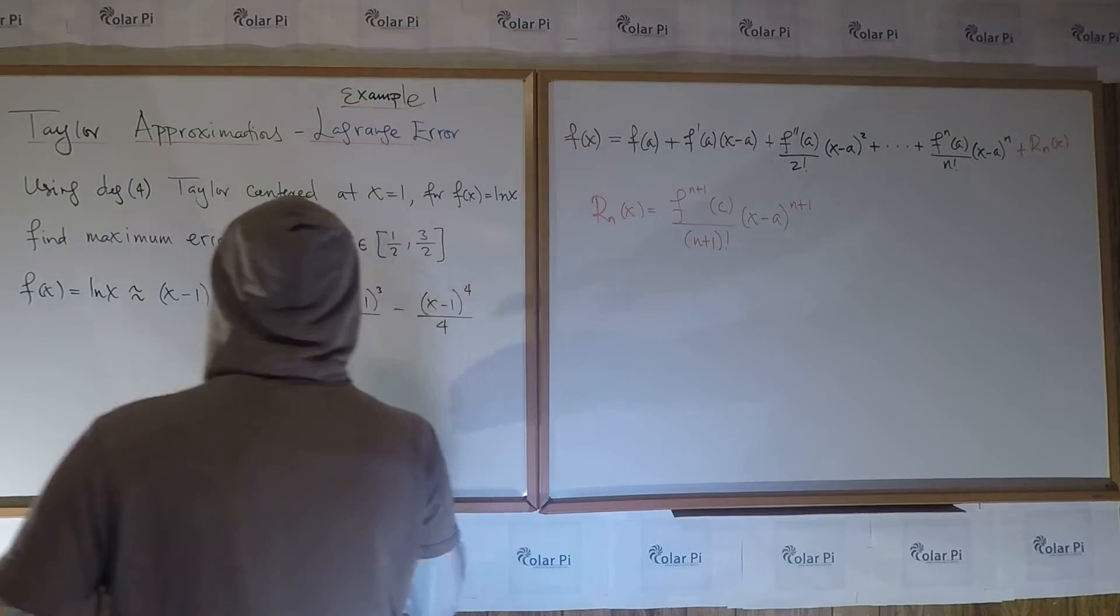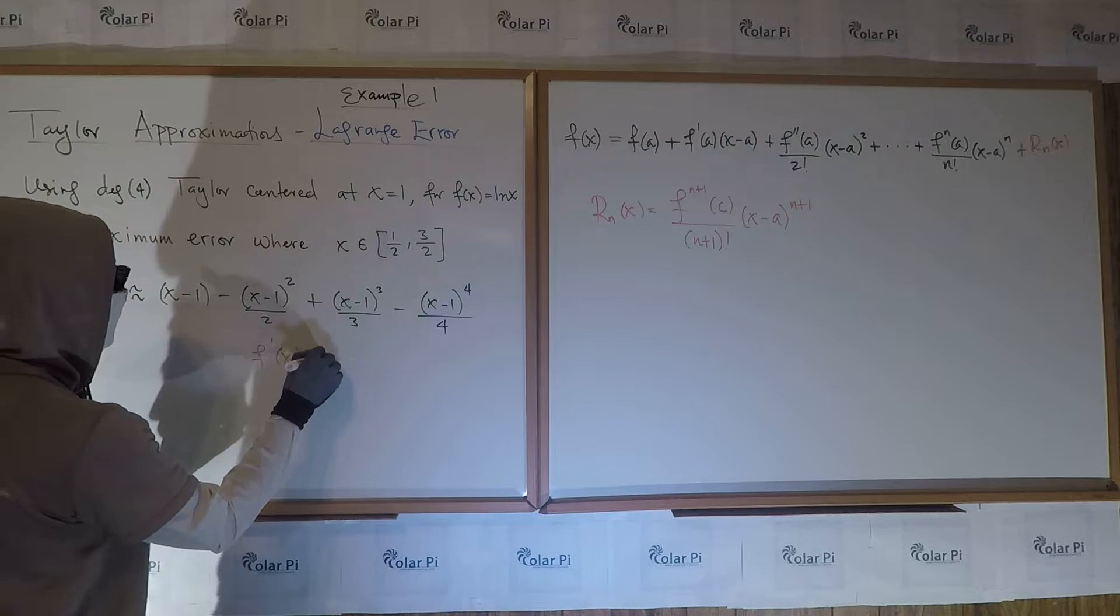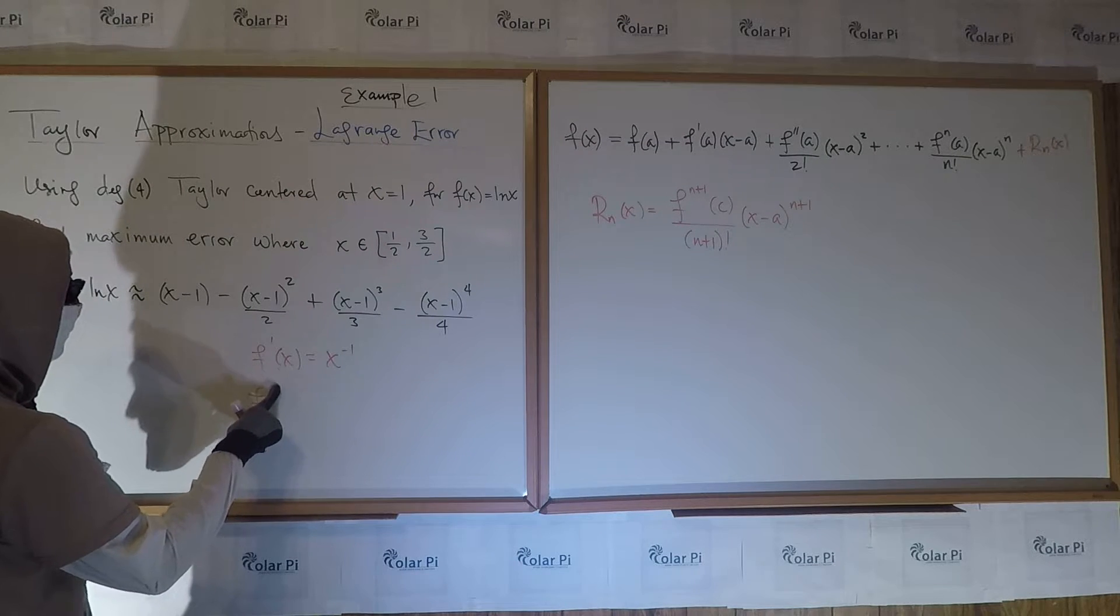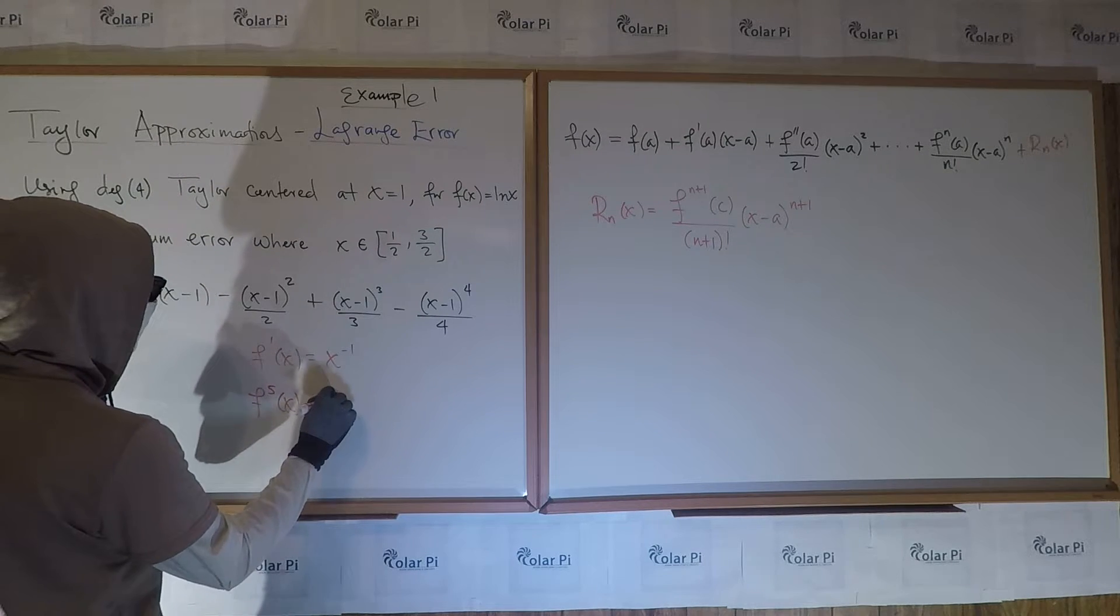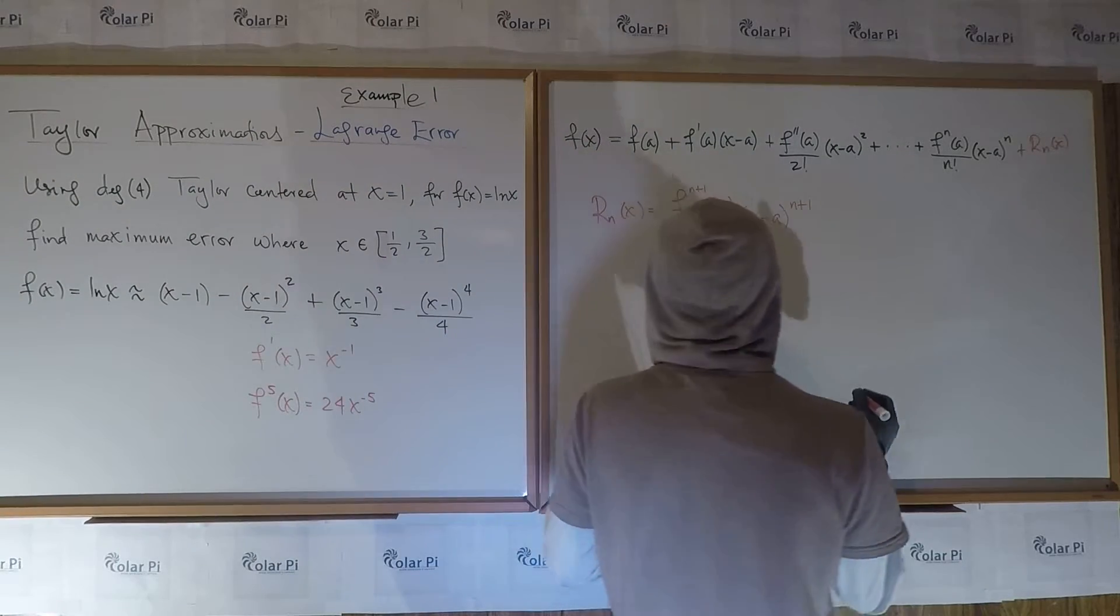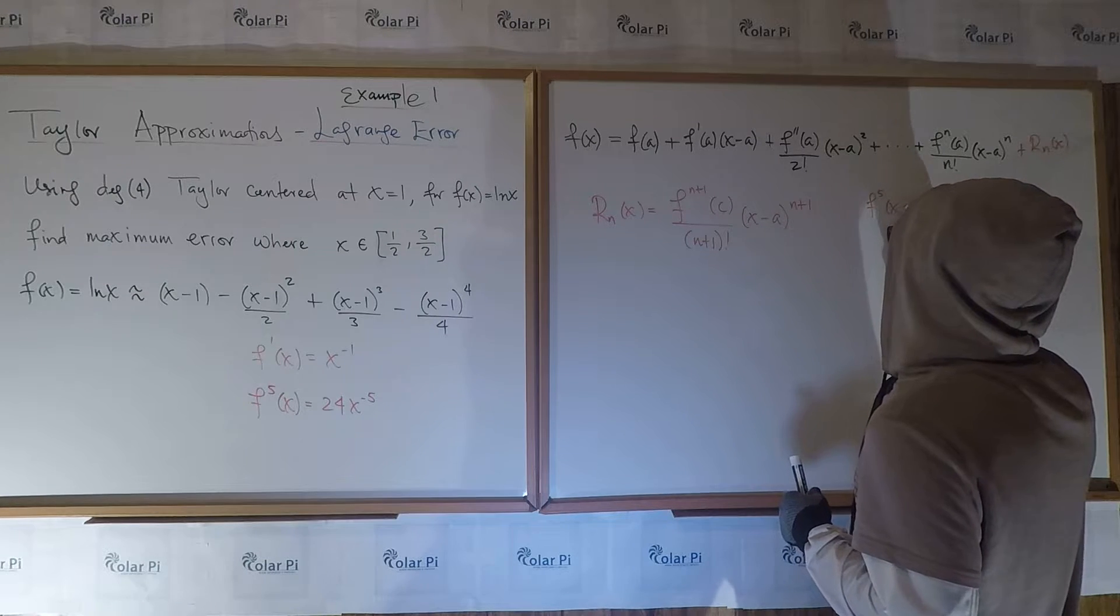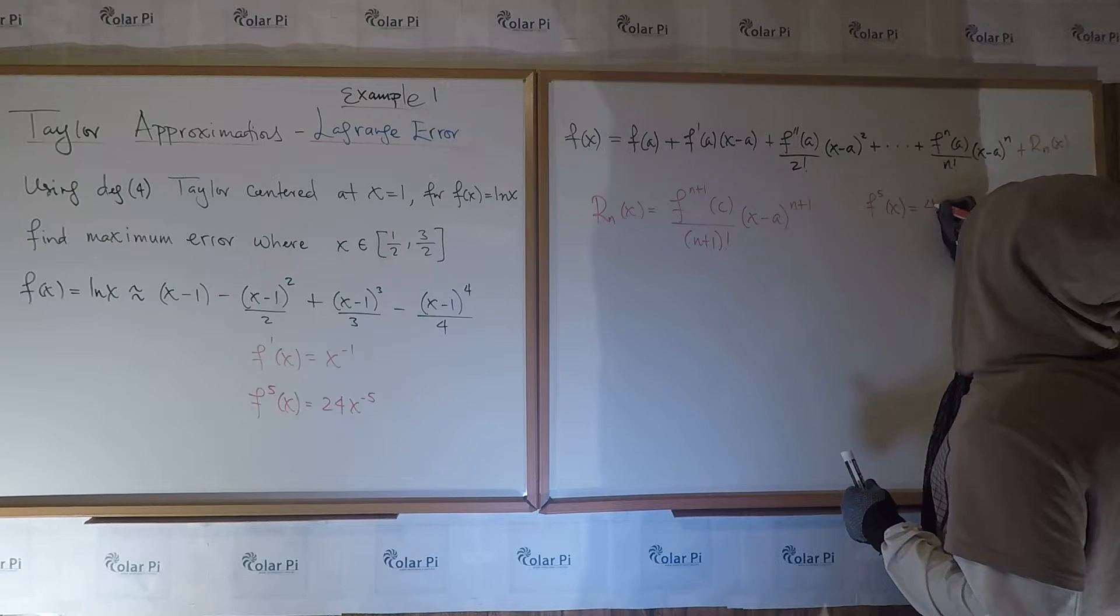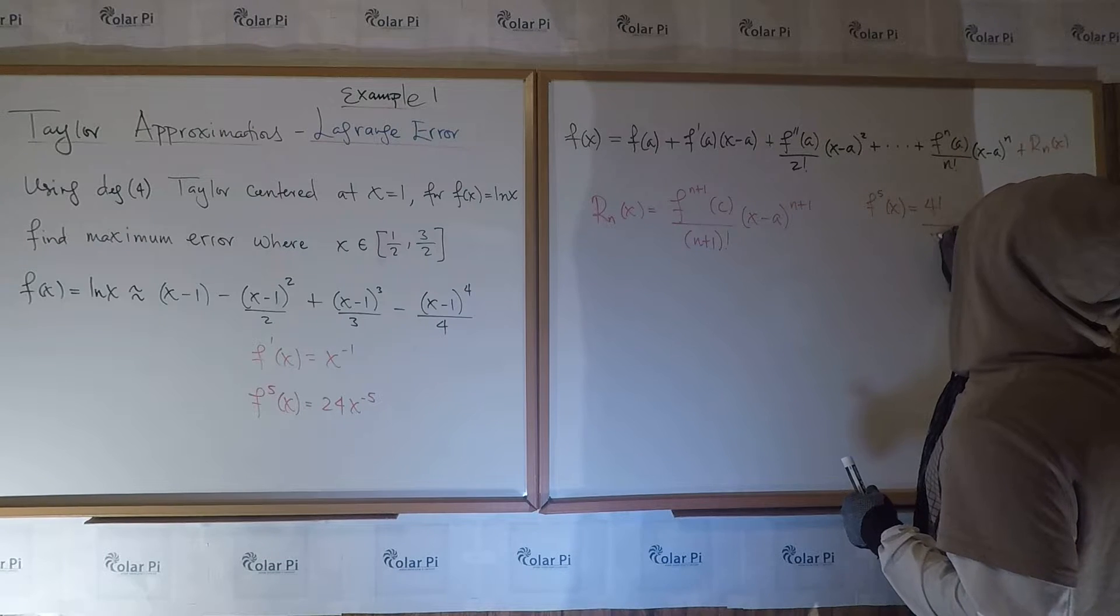So for our function ln of x, since the first derivative f prime of x is equal to one over x, which is x to the negative one, without too much work, you can find that the fifth derivative is going to be 24 x to the negative five. And so that I'm saying is f of 5 of x, the fifth derivative for our function f of x is 24, which is 4 factorial times x to the negative fifth. And so 4 factorial over x to the fifth.